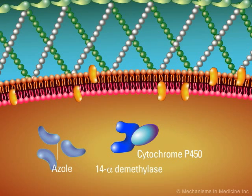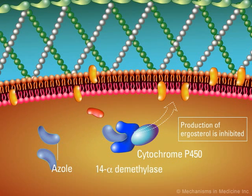Although some azoles have an immediate effect of damaging the fungal cell membrane directly, their major mechanism of action is by binding to the cytochrome P450-mediated 14-alpha-dimethylase enzyme, thus inhibiting the dimethylation of lanosterol and blocking the synthesis of ergosterol. In turn, this results in an accumulation of 14-alpha-methylsterols and a depletion of ergosterol in the cell membrane.